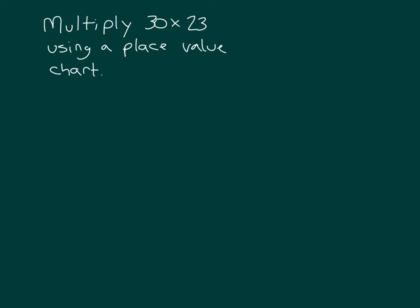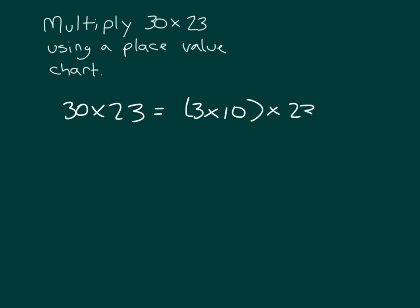We can express 30 as 3 times 10, so that 30 times 23 equals 3 times 10 times 23. With the associative property, we can then rewrite this as 3 times 10 times 23.